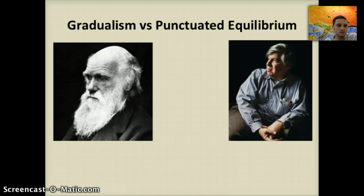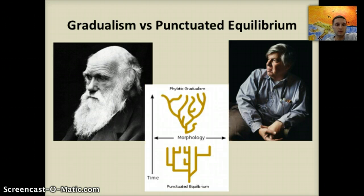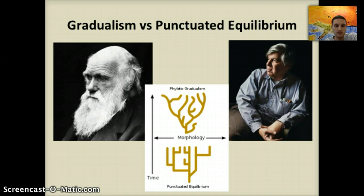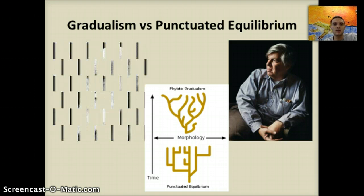In punctuated equilibrium, there would be no change, and then some sort of punctuating event would disrupt the equilibrium. In terms of geological time, this might still take hundreds or thousands of years, but in terms of overall geologic time, it would occur very quickly. The fossil record does support both gradualism and punctuated equilibrium occurring in nature.